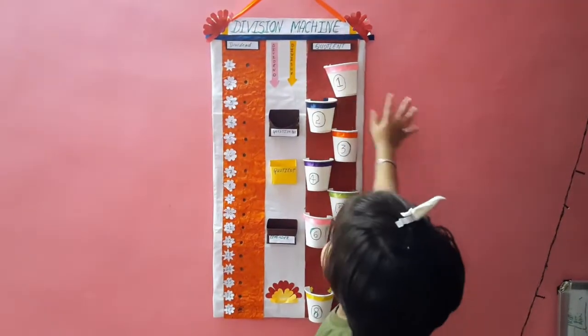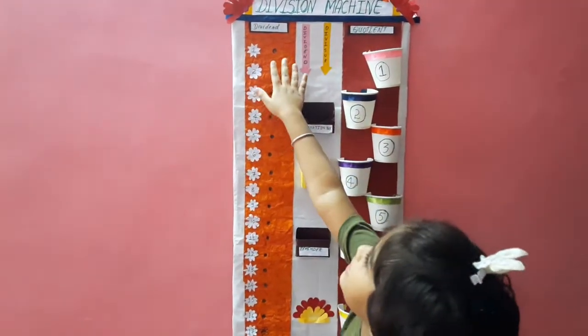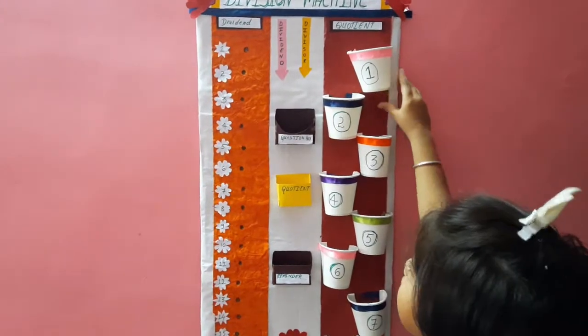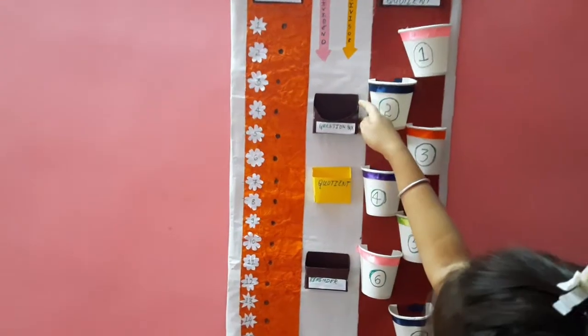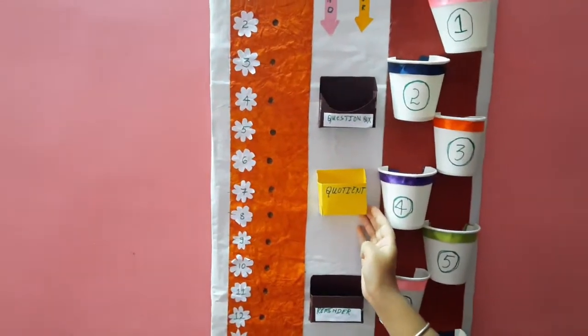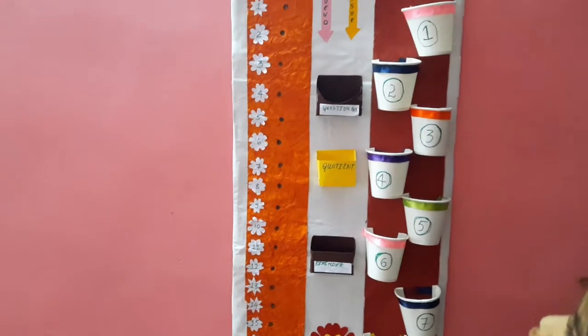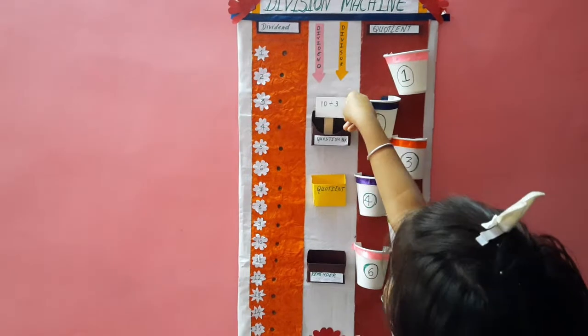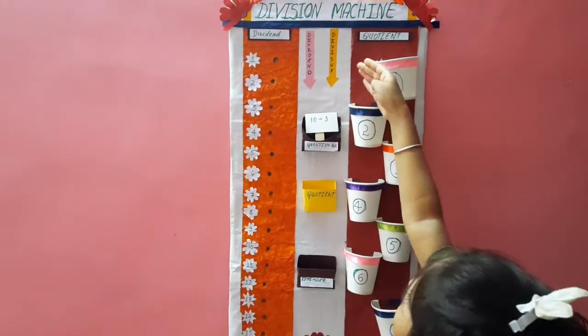So, this is the division machine. We have 3 rows. One is dividend and another is quotient. And in the middle, we have 3 boxes: one is question box, another is quotient, and another is reminder. So, my question is 10 divided by 3. So, 10 is the dividend and 3 is the divisor.